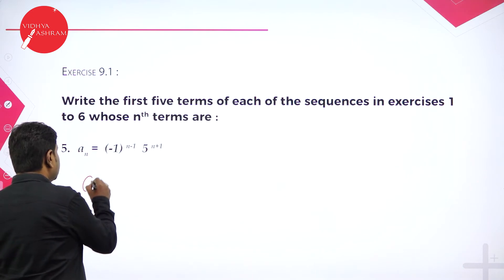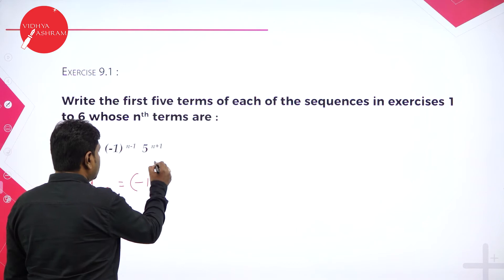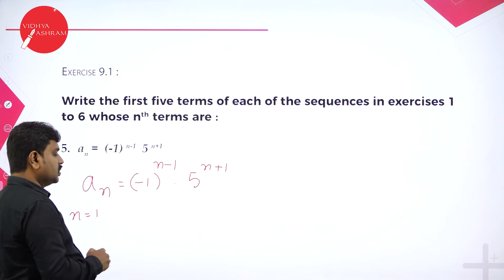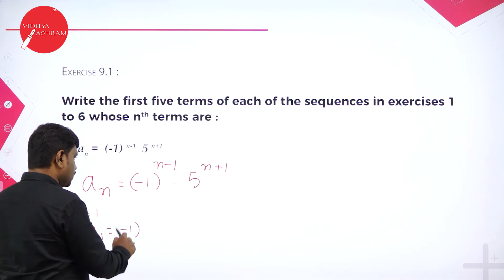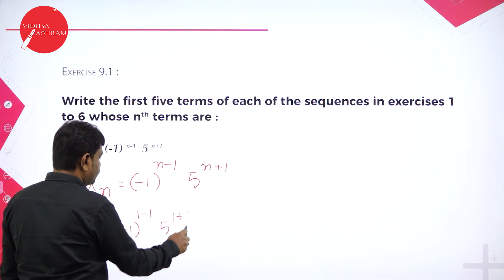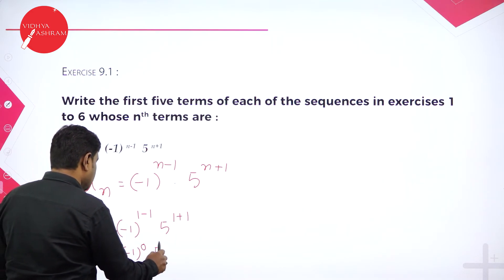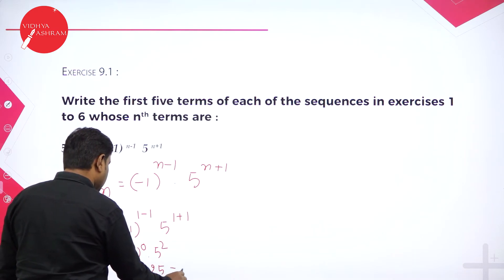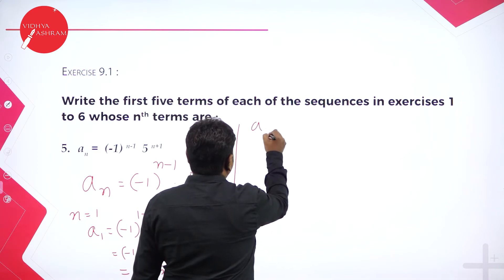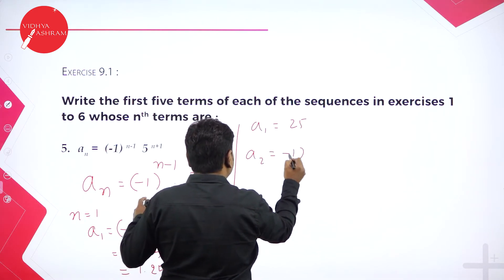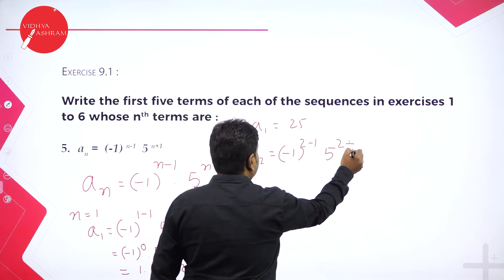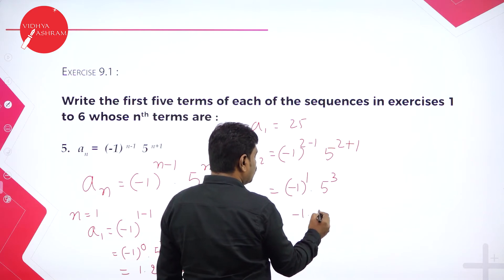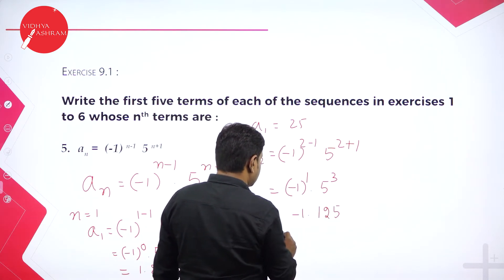Problem 5 is very interesting: a_n = (−1)^(n−1) × 5^(n+1). For a₁: (−1)^0 × 5² = 1 × 25 = 25. Anything to the power 0 is 1. For a₂: (−1)^1 × 5³ = −1 × 125 = −125. For a₃: (−1)^2 × 5⁴ = 1 × 625 = 625. Note that (−1) to an even power is +1 and to an odd power is −1.